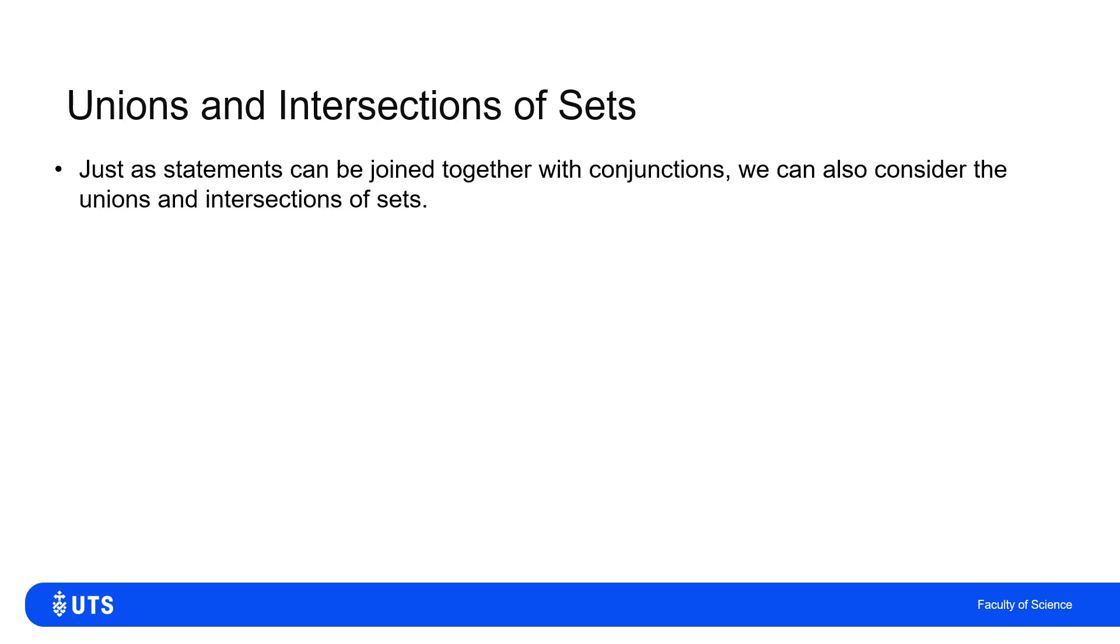Just as we saw conjunctions of logical statements, we have very similar ideas, and while not identical, similar notation for sets. We define the intersection of two sets A and B as all elements which belong to set A and set B.